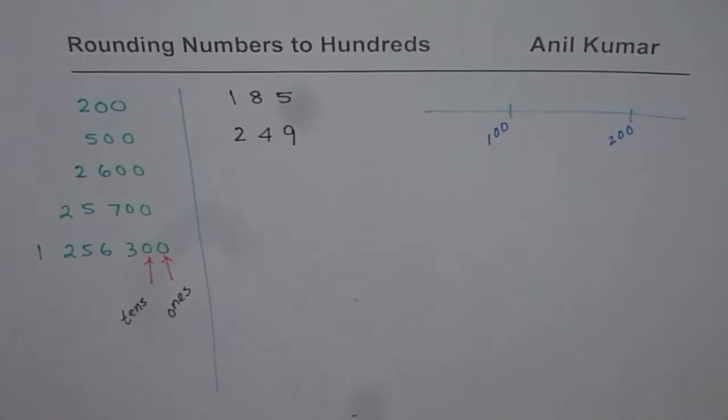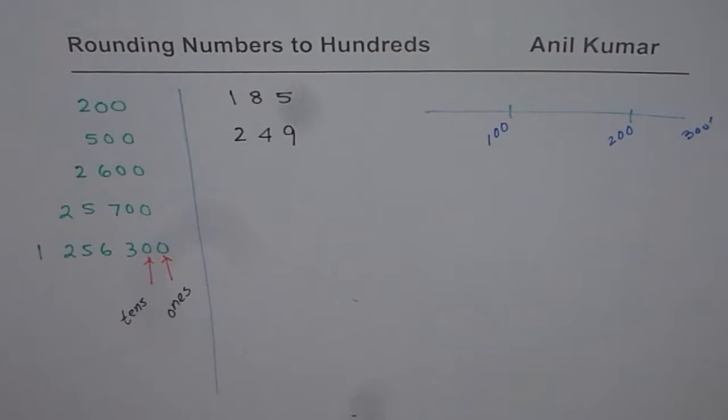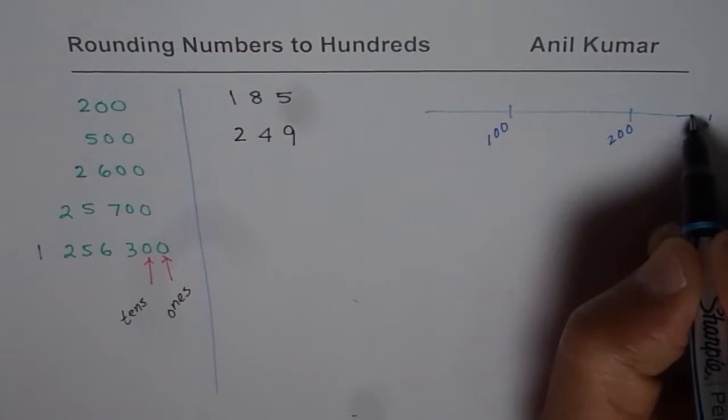let us say we have 100 at this position. This is 100 for us and this position is 200 for us. And let's say 300 is after that, somewhere here. Let me extend this line.